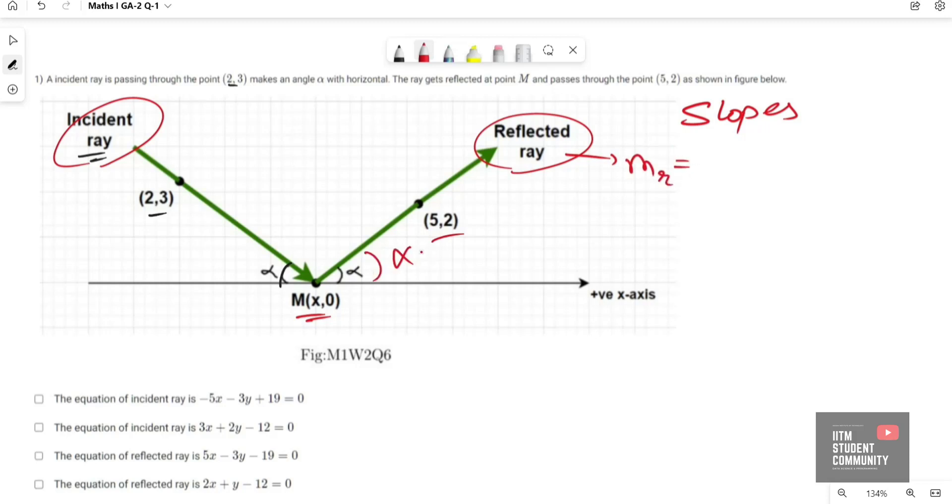Slope of reflected ray m_R is equal to tan alpha. Slope of incident ray, say m_I, which is equal to tan of the angle made with x-axis, let us say theta. This theta is pi minus alpha, so m_I is tan(pi minus alpha). Therefore m_I is tan minus tan alpha.